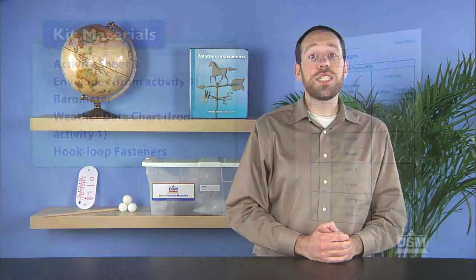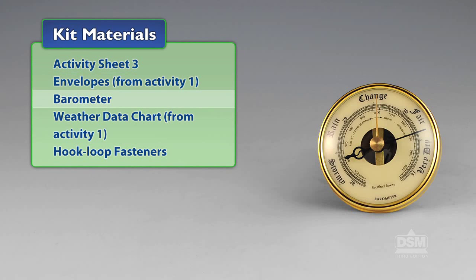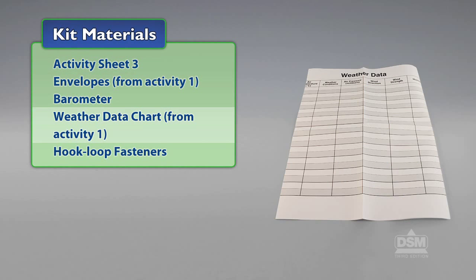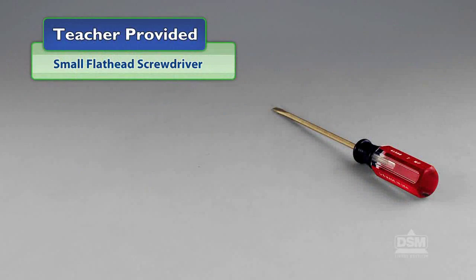You will need the following materials from the kit: Activity Sheet 3, Envelopes from Activity 1, Barometer, Weather Data Chart from Activity 1, and Hook Loop Fasteners. You will also need to provide a small flathead screwdriver.